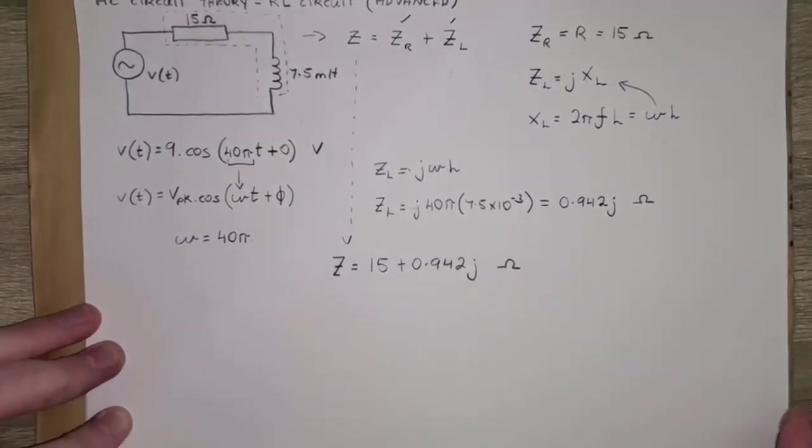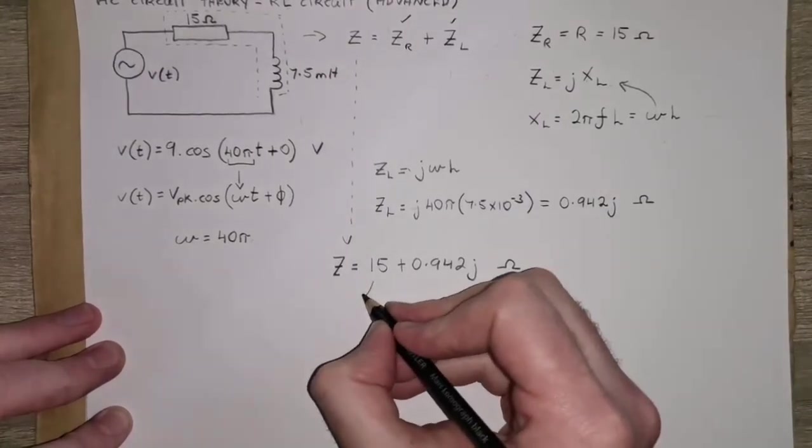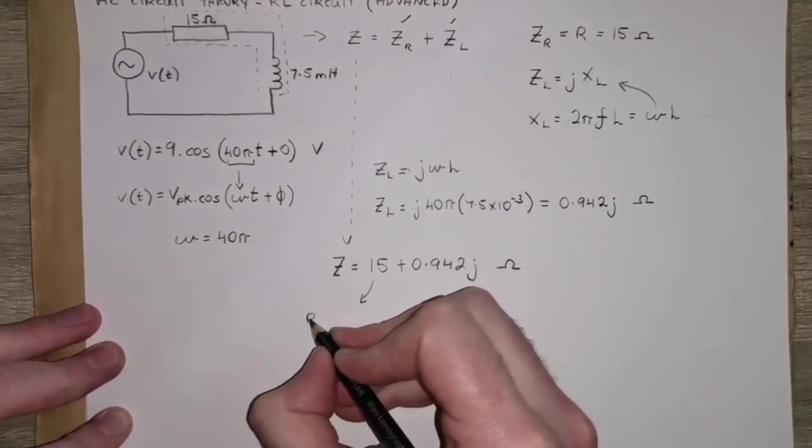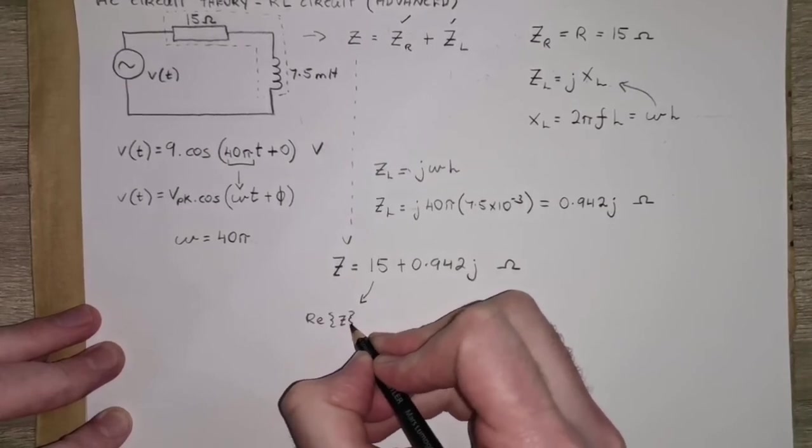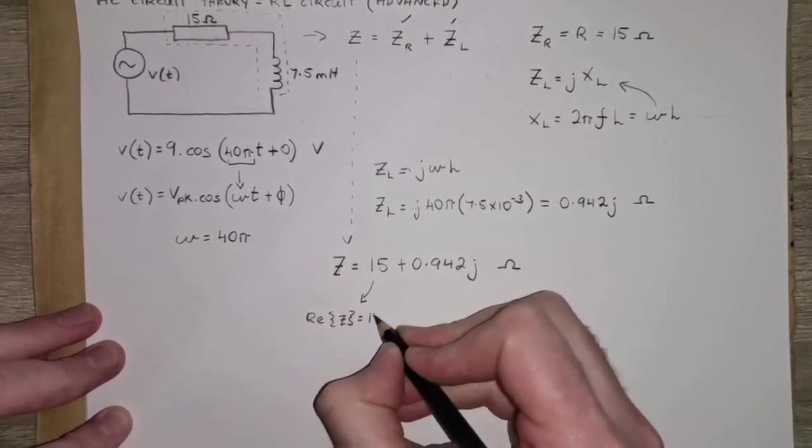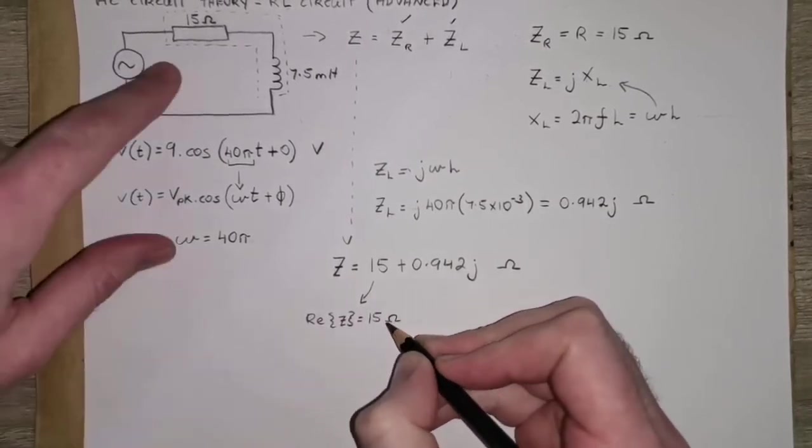We can work out that the overall impedance is 15 plus 0.942 j ohms. And because we have it in Cartesian, this represents the real part of the impedance Z. And it's equal to 15 ohms, and that's the resistive part of the circuit.